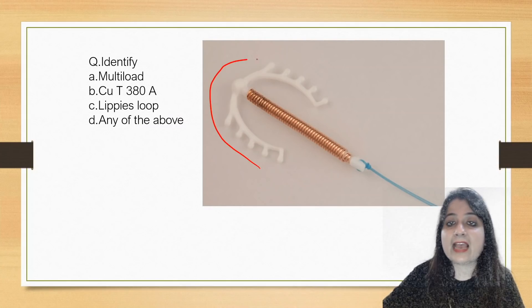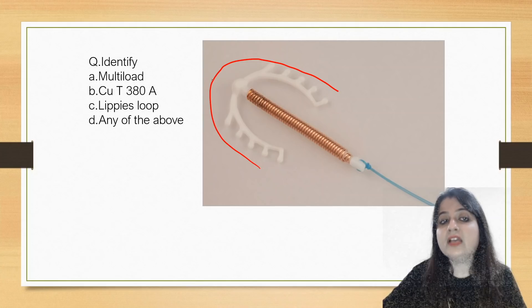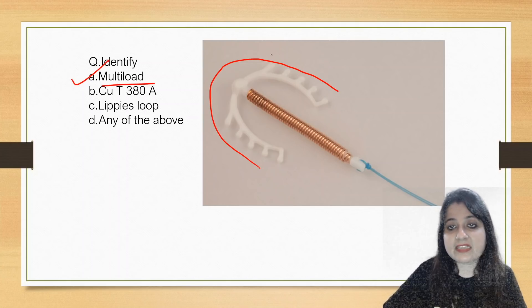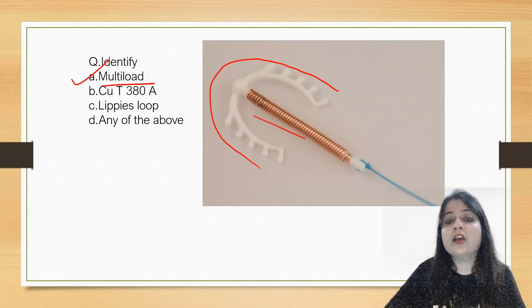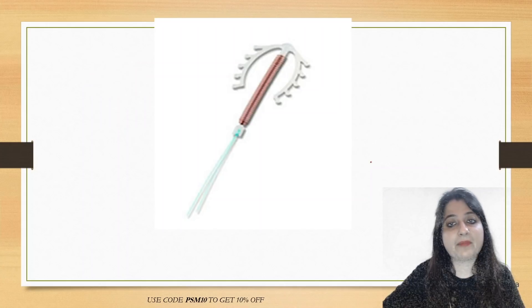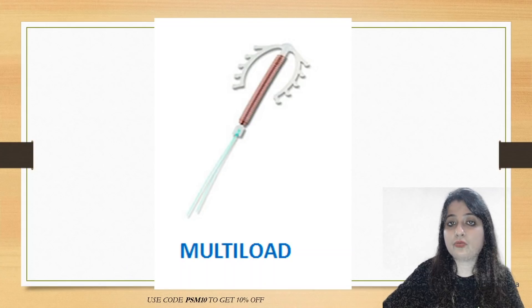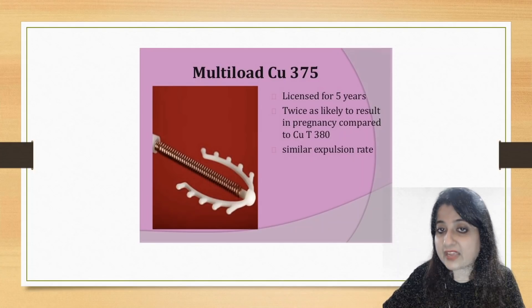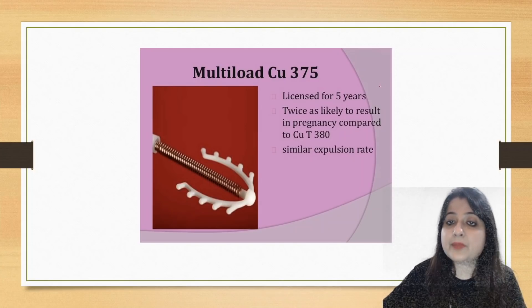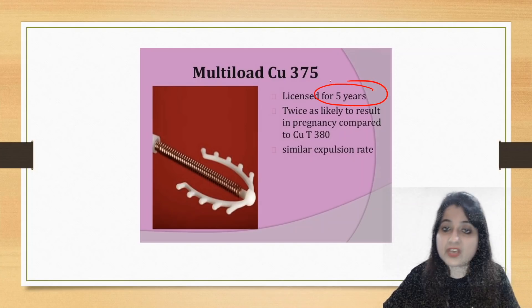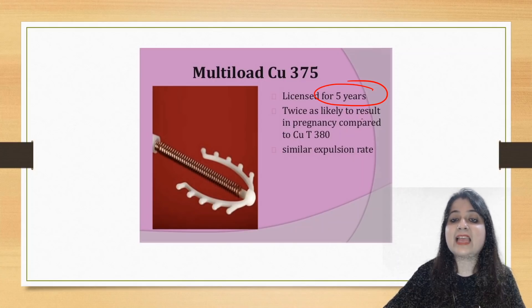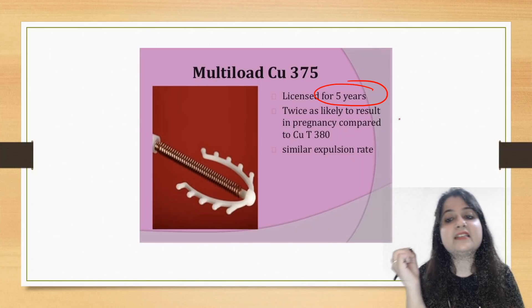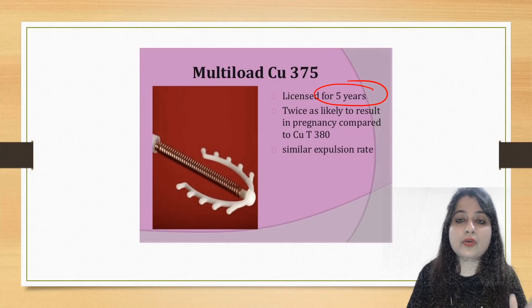This one already has the letter U in its shape — U-shaped. This is Multiload. Copper wire is only on the vertical stem. Multiload Copper 375 is important. It has been licensed to be used for five years. It has twice the likelihood of resulting in pregnancy compared to other IUDs, so the failure rate is higher, but a similar expulsion rate.